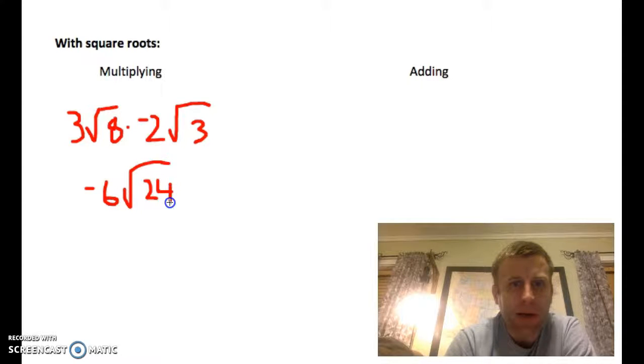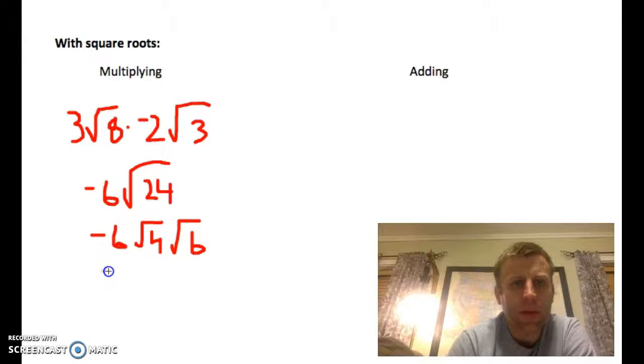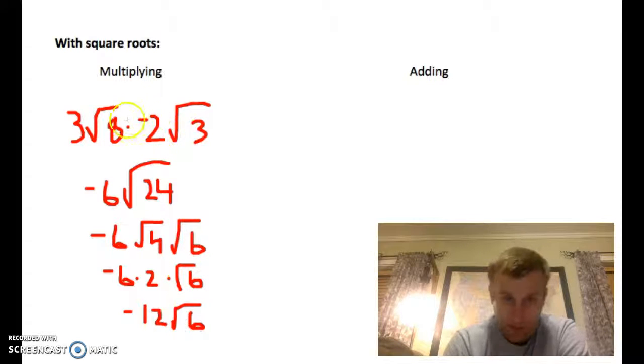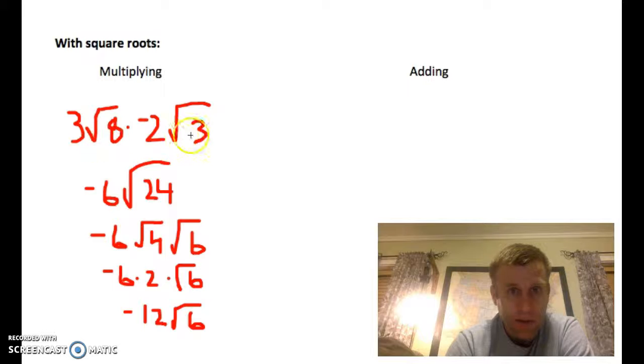And then, simplify your radical there. So, negative six. Let's see, we'll break that into square root of four and square root of six. So, negative six times two times square root of six is negative twelve square root of six. The point is, you can multiply radicals together. They don't have to be like radicals. We have different radicals here, different numbers under the square roots.